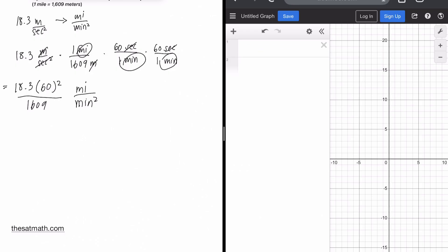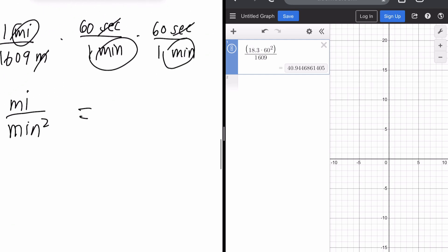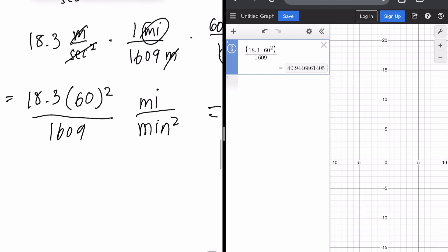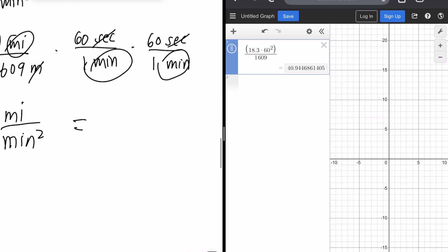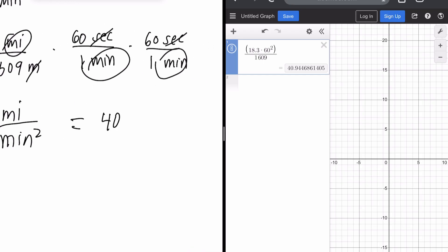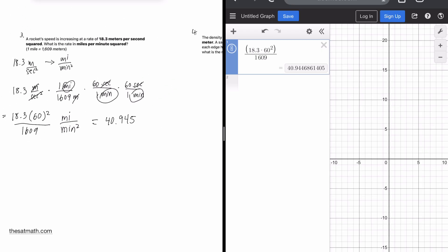Let's go into Desmos. 18.3 times 60 squared. It doesn't matter what order you necessarily do this in because based on PEMDAS, this is all multiplication and division are the same priority. So 18.3, 60 squared, 16.09. 40.945. Okay. Wonderful.